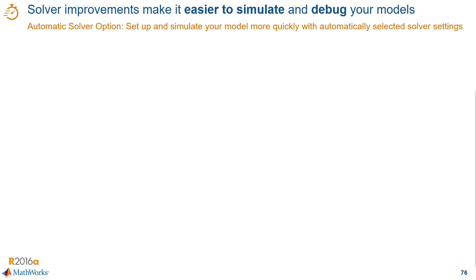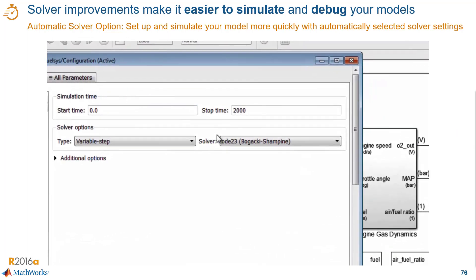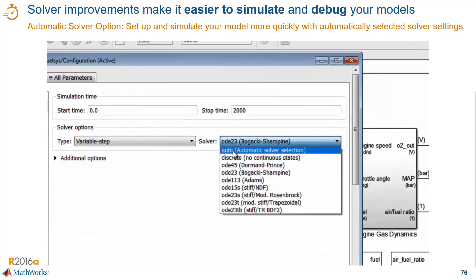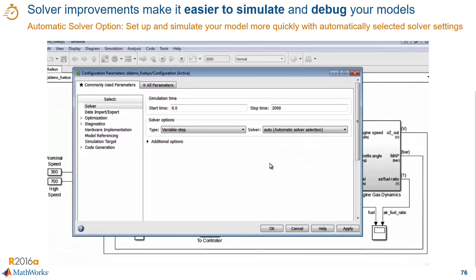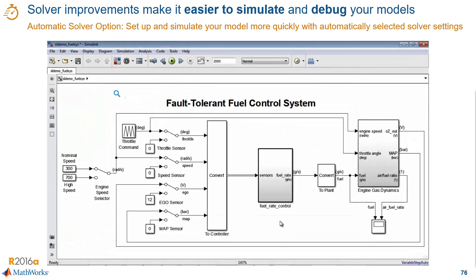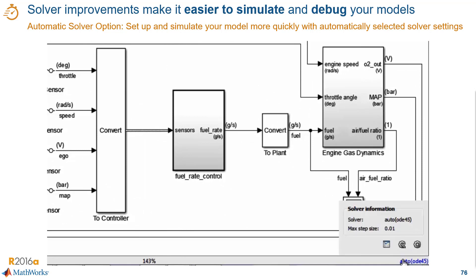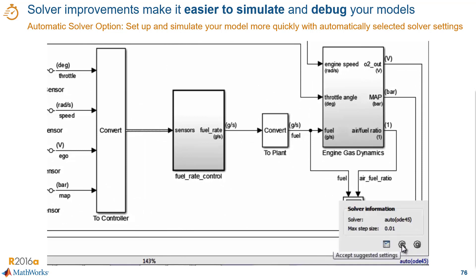A critical piece for simulation performance is the solver. You now have solver improvements available that make it easier to simulate and debug your models. One of these improvements is that Simulink can automatically select a solver and the step size that is optimized for your specific model, considering factors like model stiffness and simulation performance. All new Simulink models use the automatic solver option, but you can lock down the solver so that it does not change from one simulation to another.